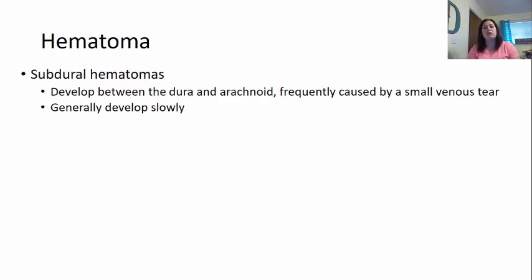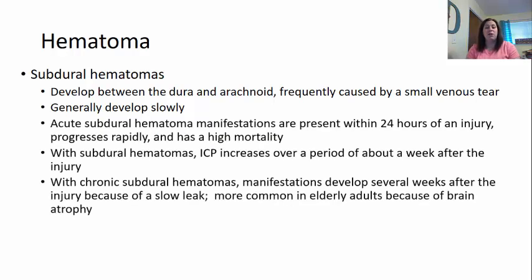A subdural hematoma develops between the dura and the arachnoid — going a little deeper. This is frequently caused by a small venous tear, so it usually develops slowly. An acute subdural hematoma manifests within 24 hours of the injury — compared to an arterial bleed which shows issues within two to three hours. It progresses rapidly after that point and has a high mortality rate, because most of the time it's left undetected until it is too late. Increased intracranial pressure from a subdural hematoma will increase over about a week after the injury.